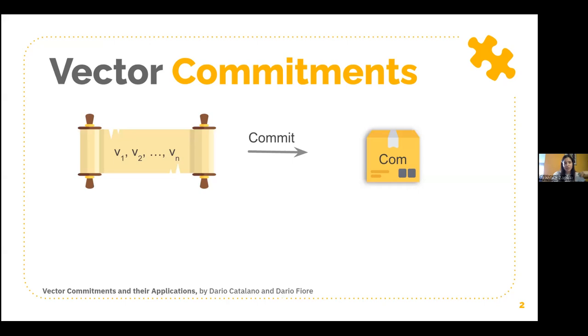Introduced by Catalano and Fiori in 2013, vector commitment schemes are cryptographic primitives where some entity called the prover can commit to potentially huge pieces of data in a shrunk mode. In a later step, our prover can convince other entities called the verifiers about some features on the vector.